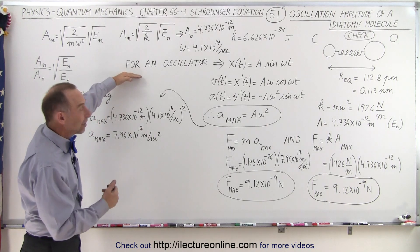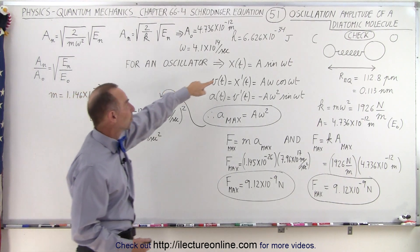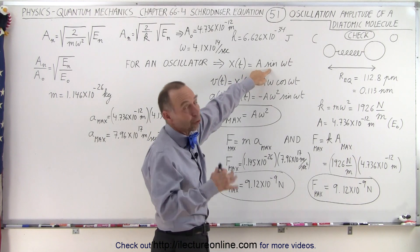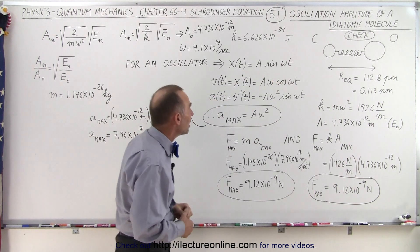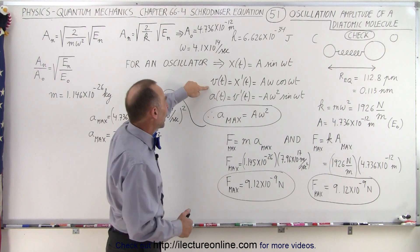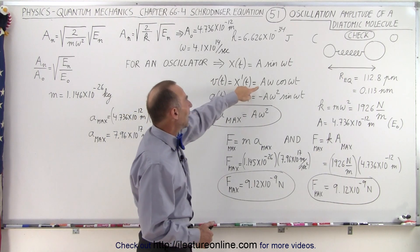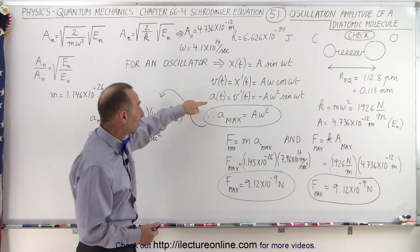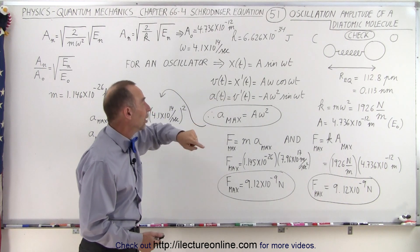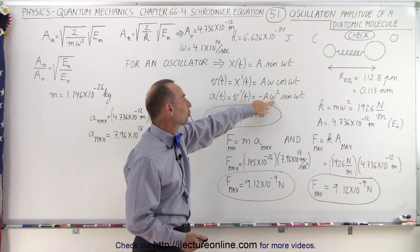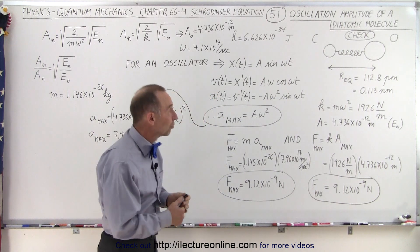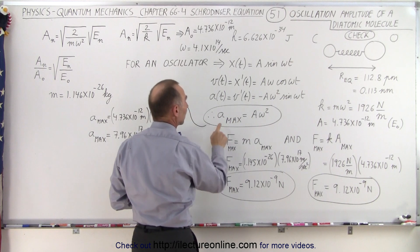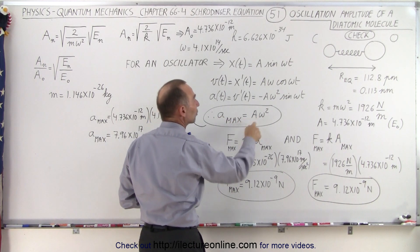Well we know that for any oscillator in the classical mechanical sense, the position as a function of time can be expressed as the amplitude times the sine or the cosine times omega t. If we then take the derivative of that, the velocity, we get a omega times the cosine of omega t. And if we take the derivative again, the second derivative of position or the first derivative of velocity, we get minus a omega squared times the sine of omega t. In other words, this gives us the maximum amplitude of the oscillation. So in this case, a max equals a times omega squared.